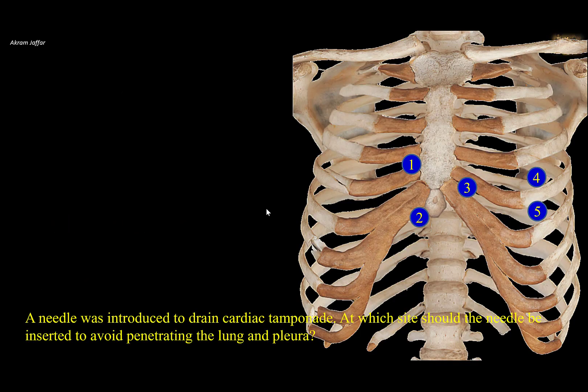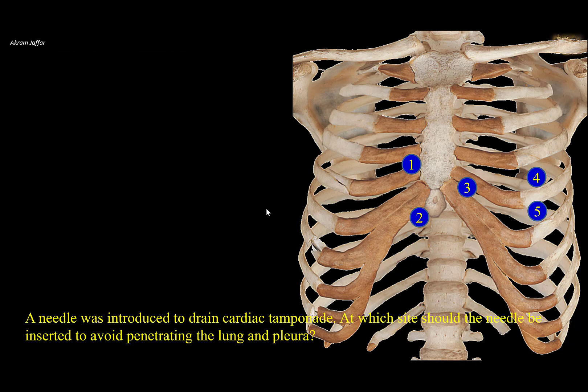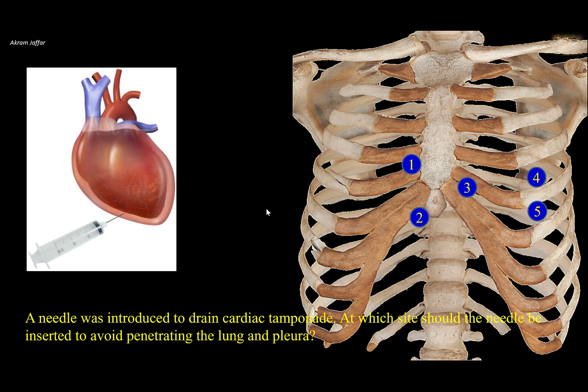A needle was introduced to drain cardiac tamponade — at which site should the needle be inserted to avoid penetrating the lung and pleura? Cardiac tamponade is a serious medical condition in which blood or fluids fill the pericardial space between the visceral and parietal layers of pericardium. This produces extreme pressure on the heart, prevents the ventricles from expanding fully, and therefore the heart cannot pump enough blood to the rest of the body. When this happens, it results in heart failure, shock, and even death. In order to relieve the pressure, a procedure called pericardiocentesis is used to obtain fluid from the pericardial cavity, in which a needle is inserted through the thoracic wall into the pericardial cavity.